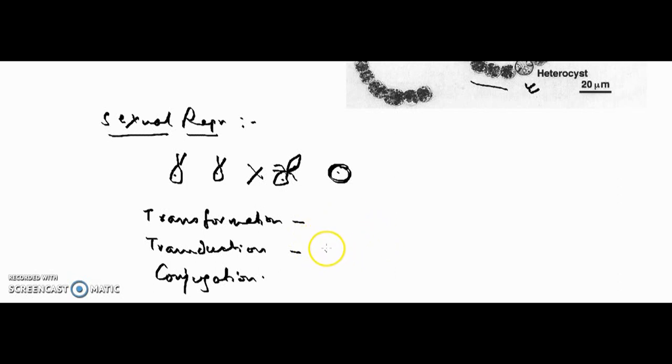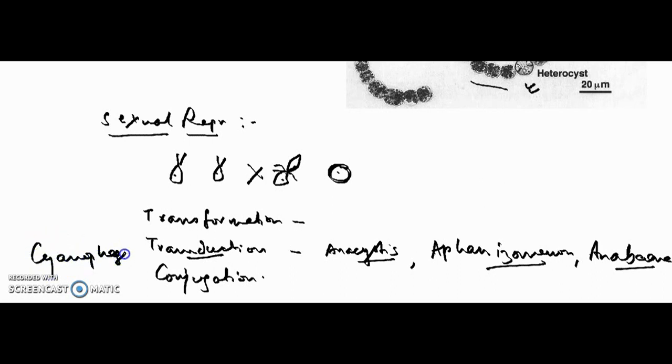It is exhibited in Anacystis, Aphanizomenon, and some species of Anabaena. Transduction occurs with the help of cyanophages, which are viruses that infect Cyanophyceae.